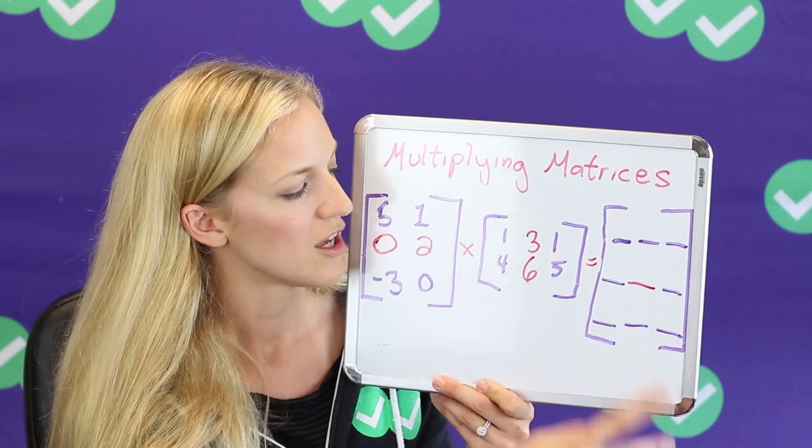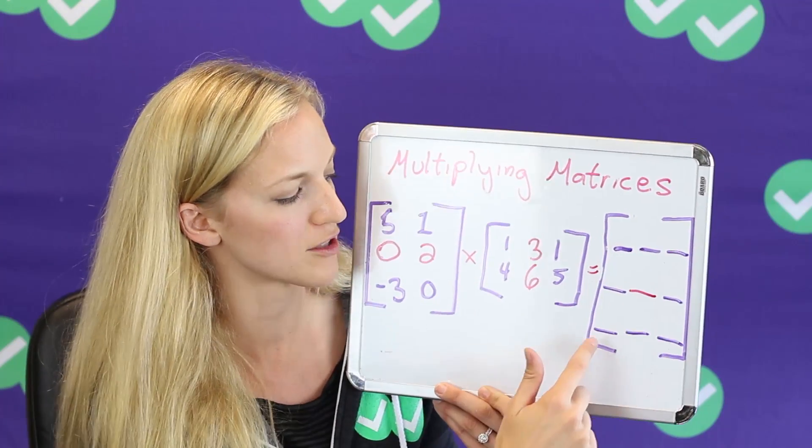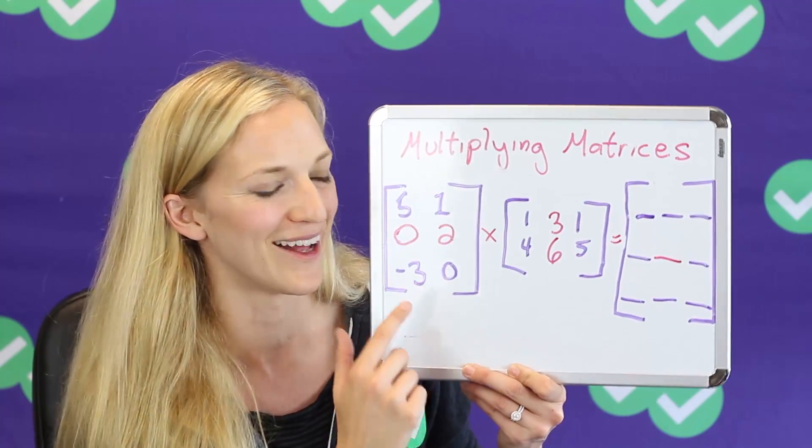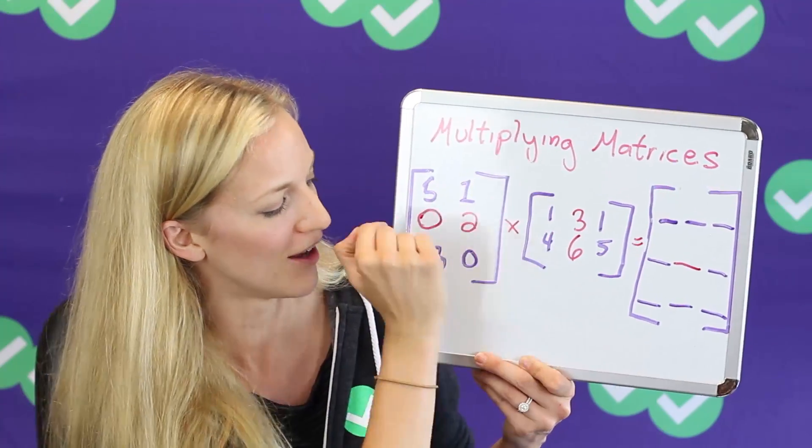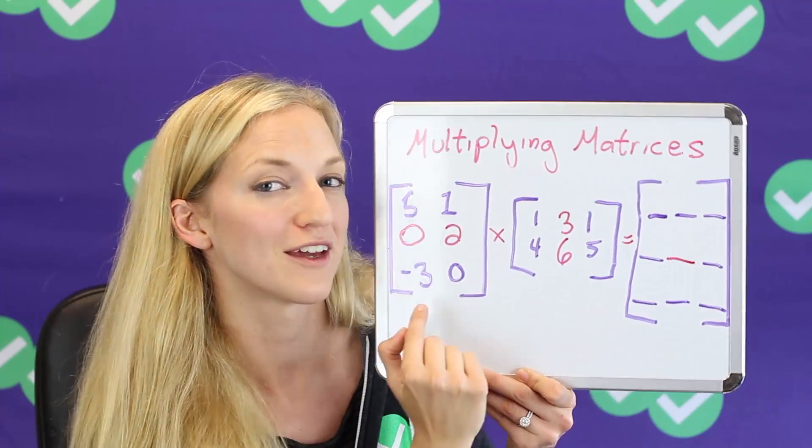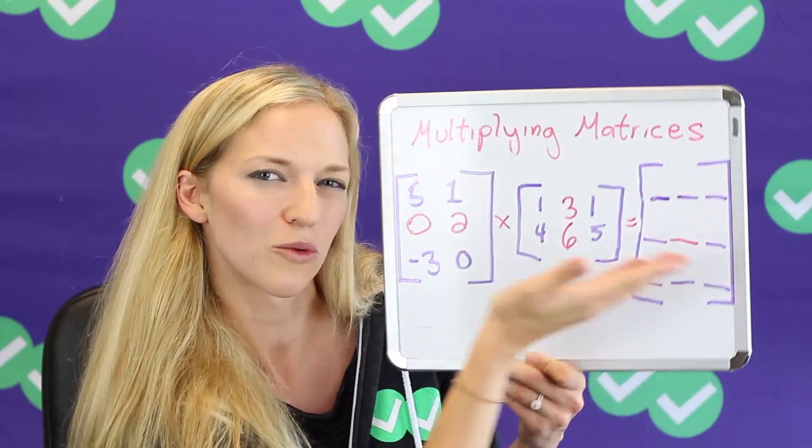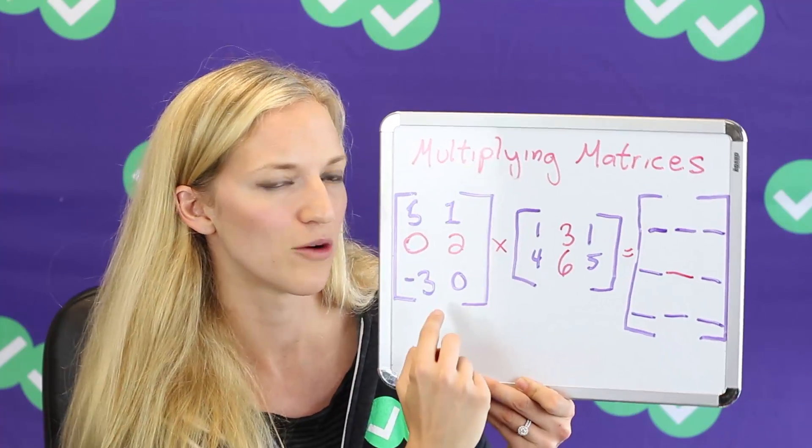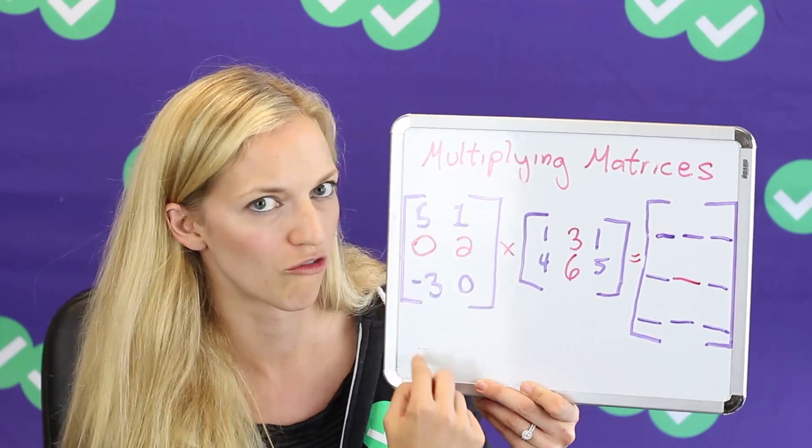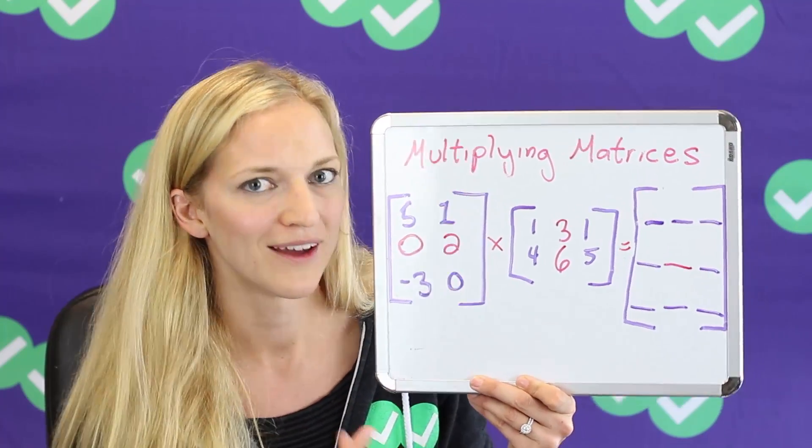So let's say I wanted to do the third row, first column. I'd go third row, first column, third row, first column. And I would look at the first one and say third row, first column, third row, first column, and think that way through. So you want to kind of start and work backwards. Start with where you want the number, and then go back and find the rows or the columns you're looking at.